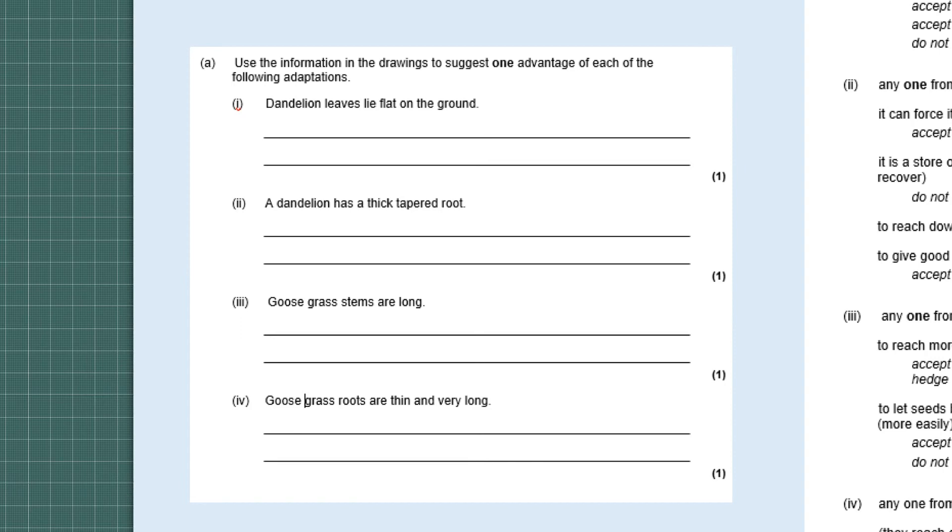Looking at the answers, the first one: dandelion leaves lie flat on the ground. That will give it an advantage because it won't be damaged by the mower, so it will go under the mower. Secondly, a dandelion has a thick tapered root. There can be many answers for this. A thick tapered root means that it gives it good anchorage in the soil so it's hard to pull up, or it could reach down further than the grass in terms of getting to water. It could be a store of food because it's quite thick, or it can force its way through the grass roots in terms of outcompeting grass roots. As you can see there's many different answers there.